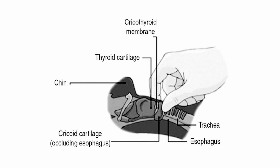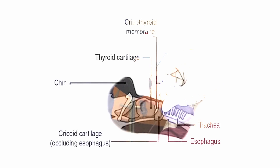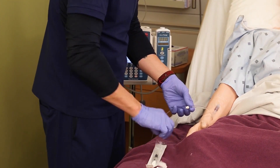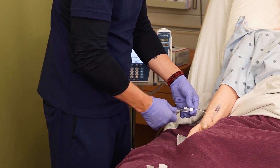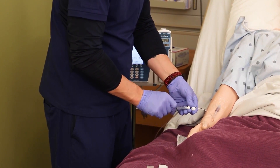This is done by applying gentle pressure at the level of the cricoid cartilage. Then induce sedation and give a muscle relaxant to prevent gagging.